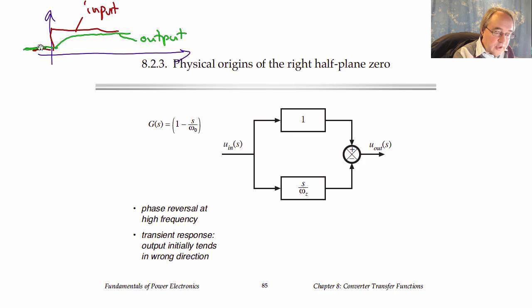But the right half plane zero response, the characteristic is that the output goes initially the wrong direction. So the output goes down instead of up, and then eventually, after some substantial time, it catches up and goes the right way and follows the input. So why do the boost converter and the buck-boost converter exhibit this kind of behavior?